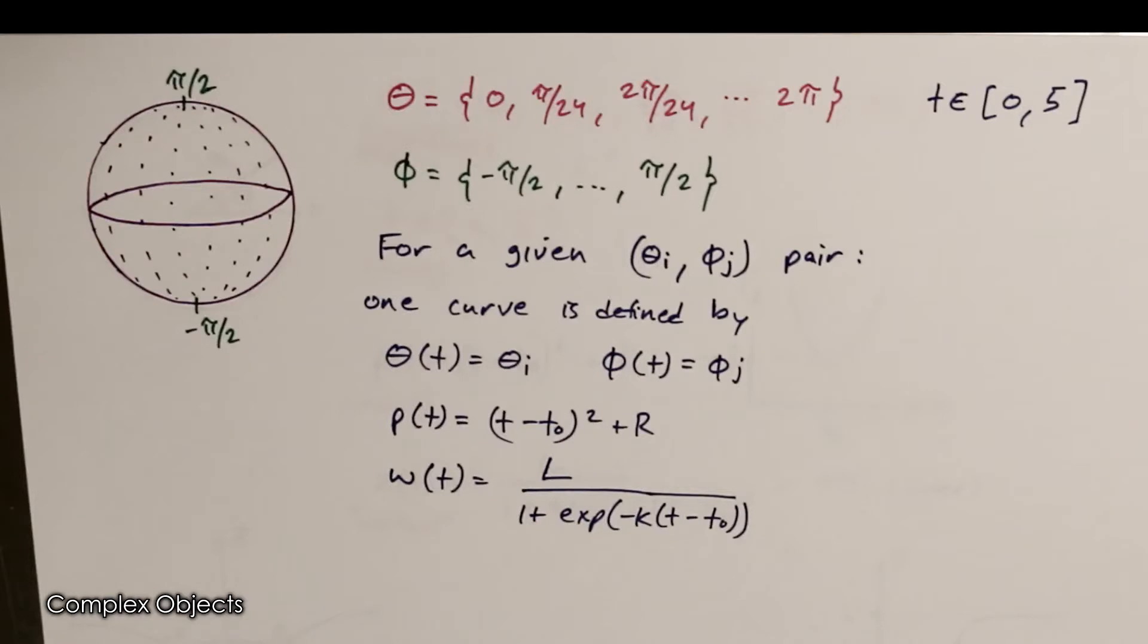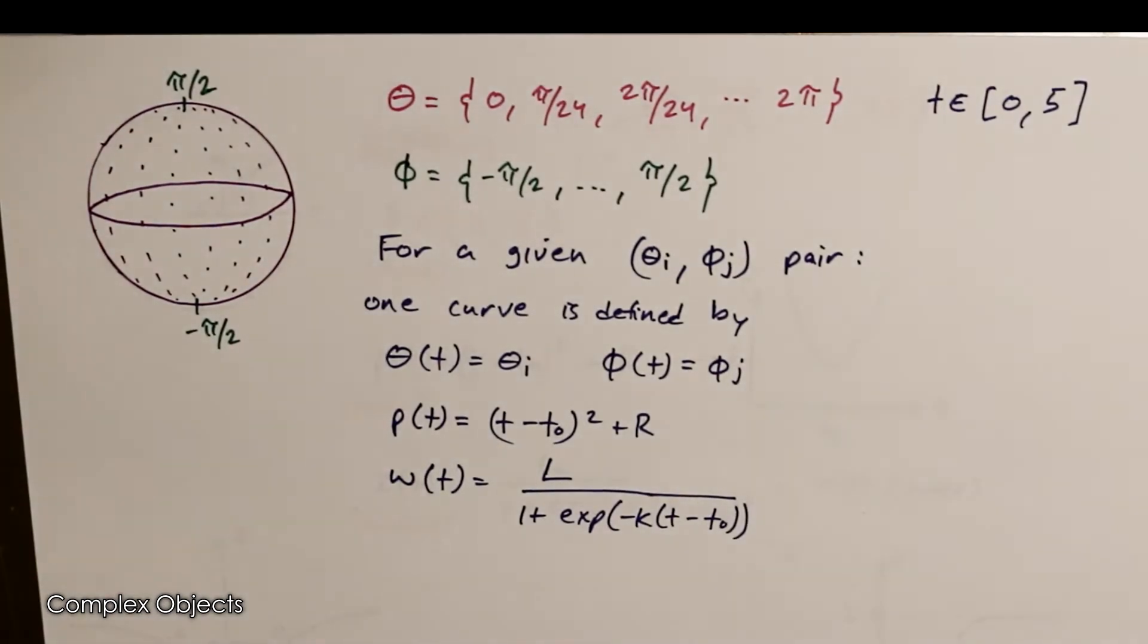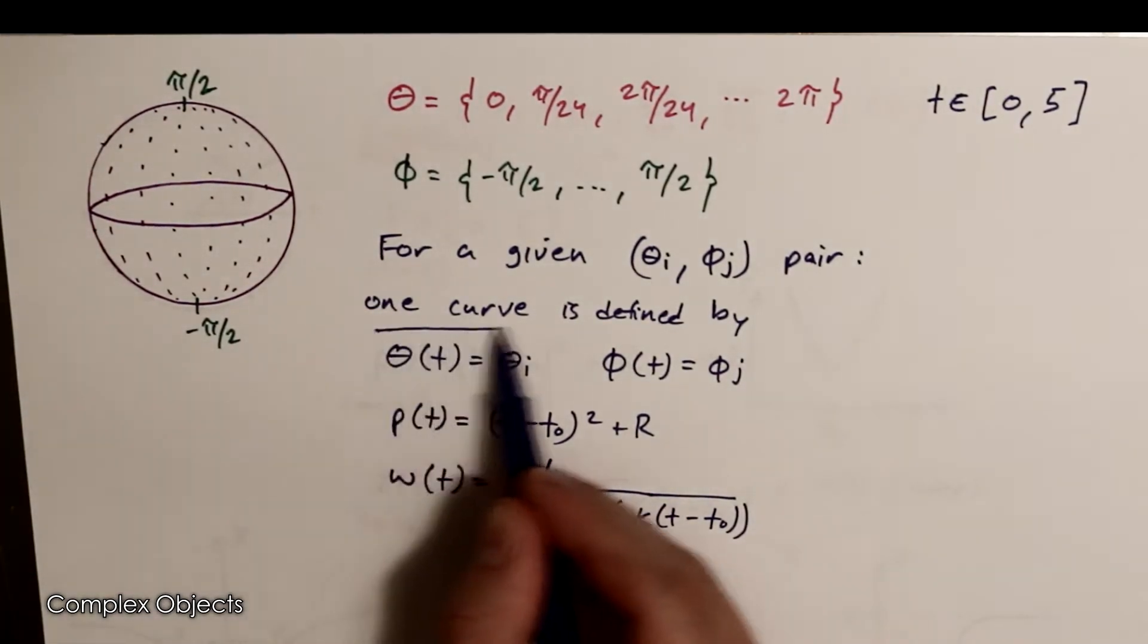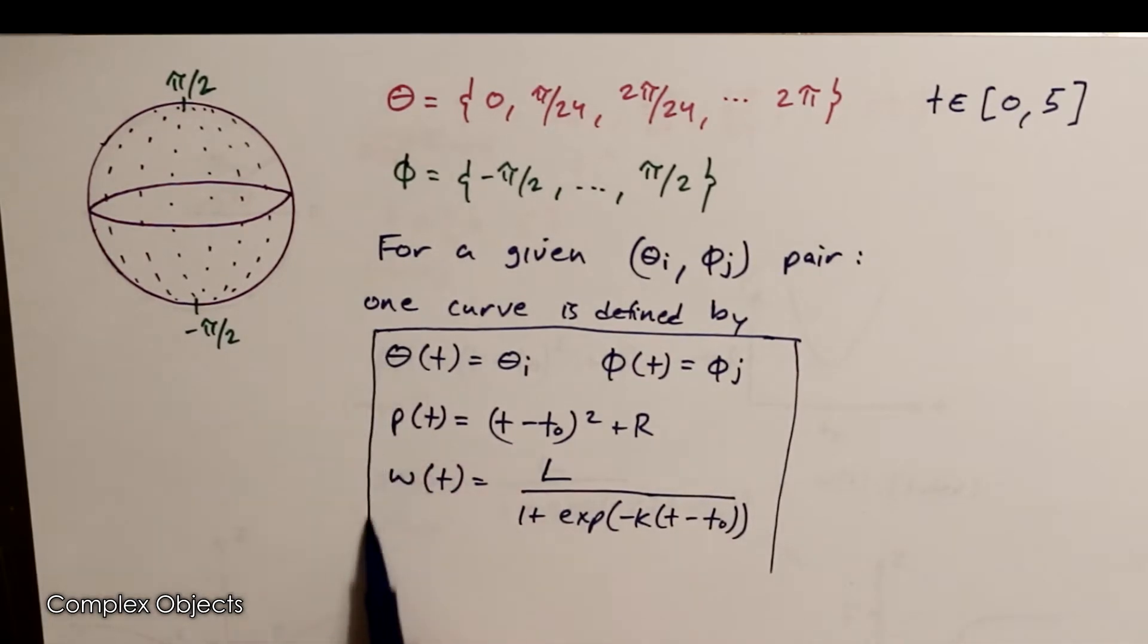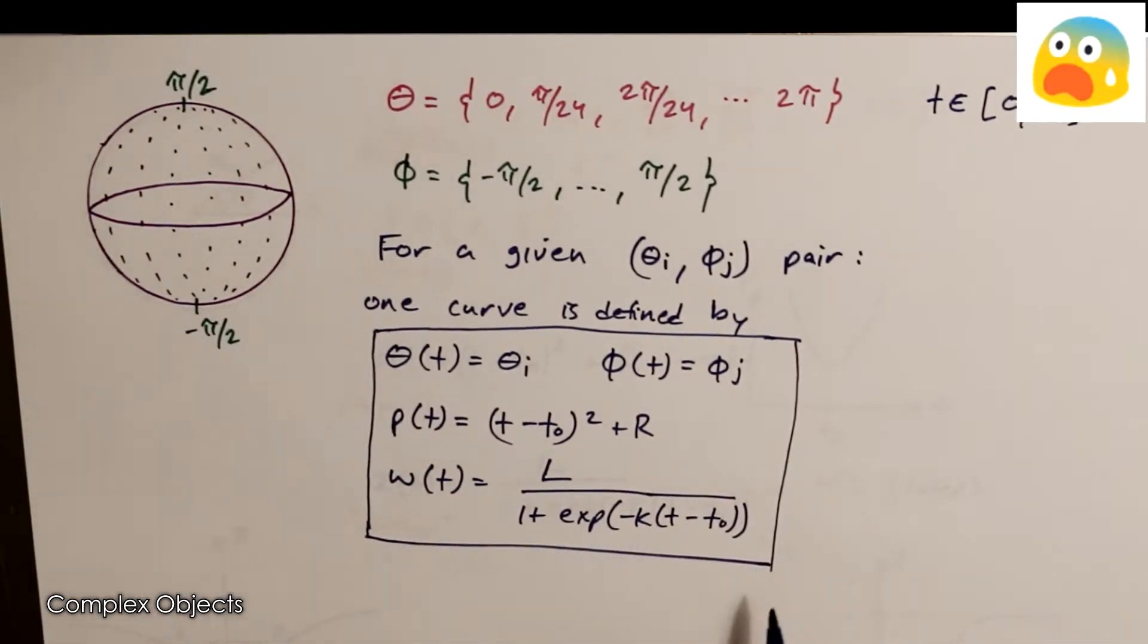And then to extend this one dimension higher, we're going to keep all these equations, and then simply add a phi coordinate, where now we have a bunch of phi-theta pairs lying on the surface of a sphere. And for each of those pairs, we're going to have the rho component come in and then go out. And then the z will now be the w component, which represents the position along the fourth dimension.